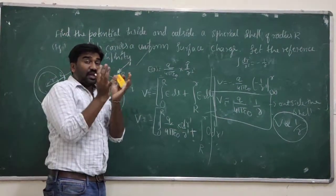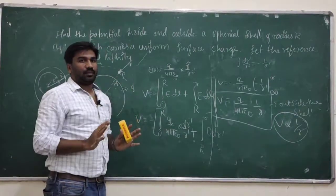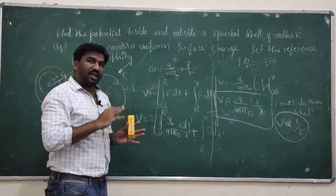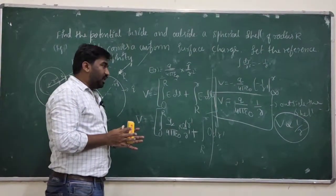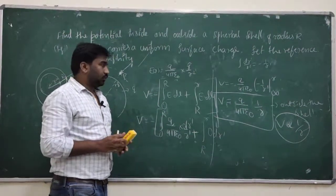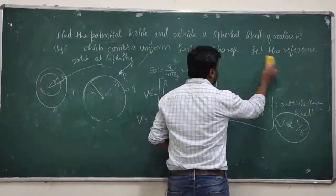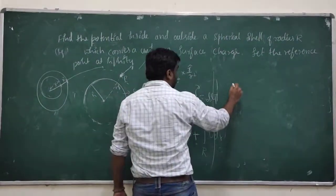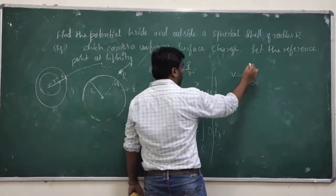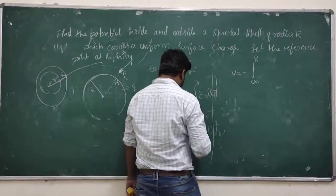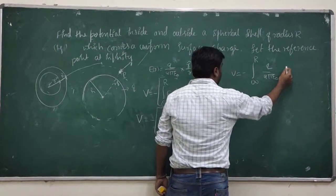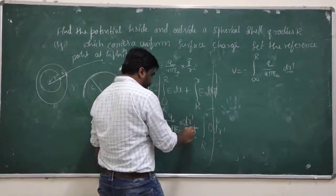Since the charges are distributed outside the spherical shell, the net electrostatic field inside is zero. Even though the potential is constant inside the spherical shell, the electrostatic field is zero because electrostatic field is a vector quantity. So the net electrostatic field is zero inside.